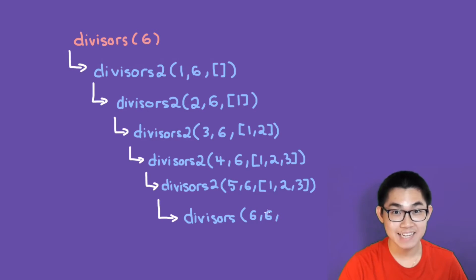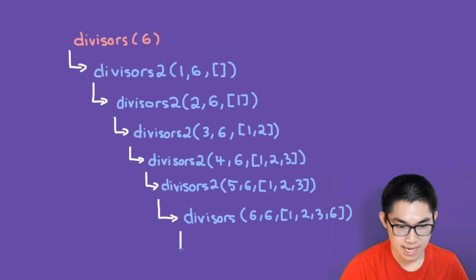Here, 6 can divide itself. So we add 6 into the list. And we recurse one last time.